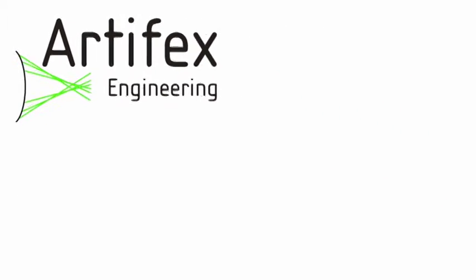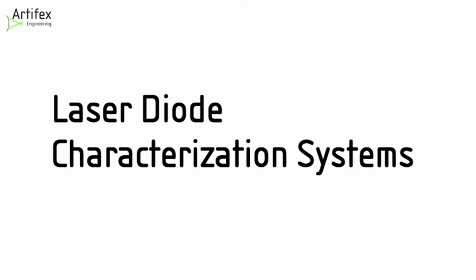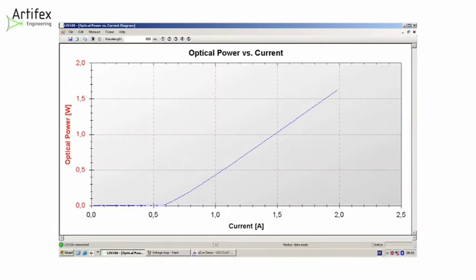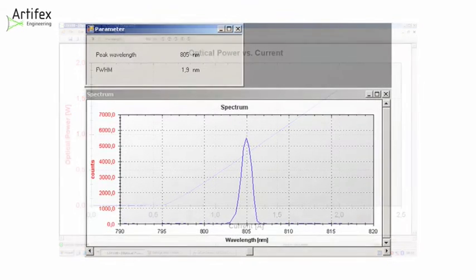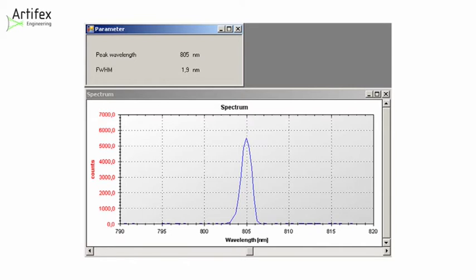The LIV Laser Diode Characterization Systems from Artifex Engineering measure power, voltage and spectrum during a current sweep. We offer systems with maximum currents from 250 mA up to 600 mA.